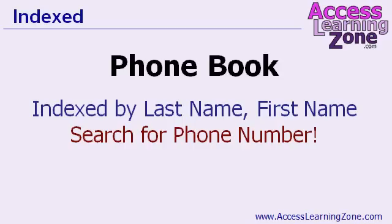The example I like to use in my class is to think of a phone book. A phone book is indexed by last name, first name. If you open it up, they're already sorted for you by last name, then by first name. Imagine if it wasn't sorted — if you had to open up the phone book and find somebody but it wasn't in any particular order, you'd have to start at the first page and flip through until you found the right person. Since it's indexed, it's much easier to find a specific person based on their last name and first name.